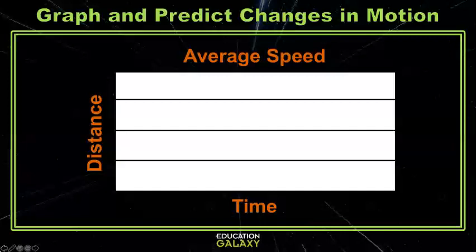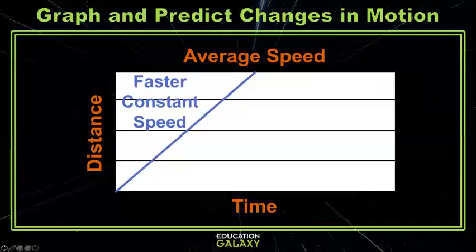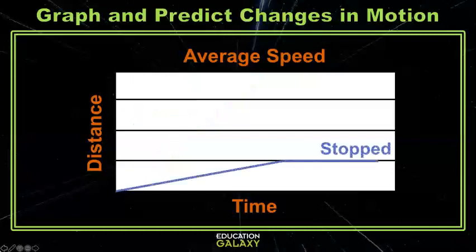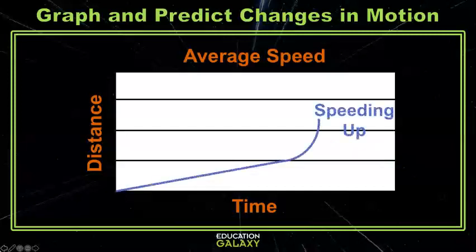If my car was always going the same speed, my graph would be a straight line. If my car was going faster, I would have a steeper line. If my car stops, you end up with a flat line. The distance remains the same, but time still moves forward. My car could also speed up or start to slow down.